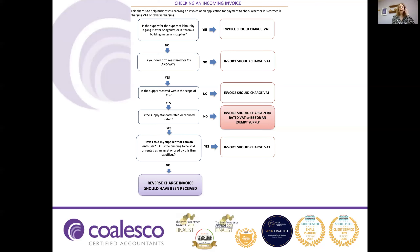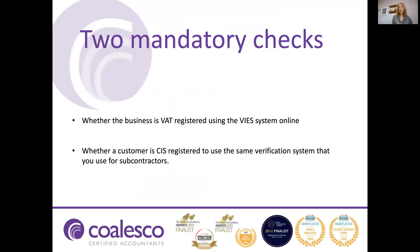We have two mandatory checks as seen from those flowcharts. I have to understand whether the business is VAT registered — I can use the VIES system online to check this. I also have to understand whether a customer is CIS registered. I can use the same system as I would to verify my subcontractors, and HMRC have agreed a workaround to this.